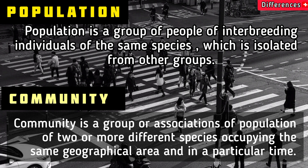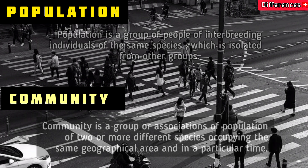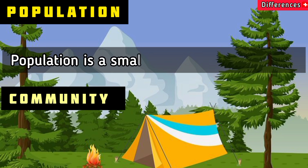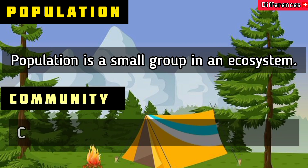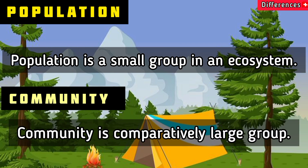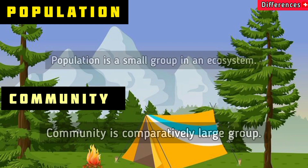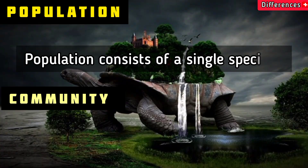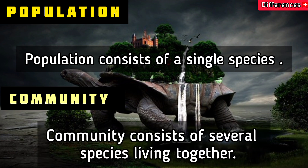In a particular time, population is a small group in an ecosystem; community is a comparatively large group. Population consists of a single species, while community consists of several species living together.